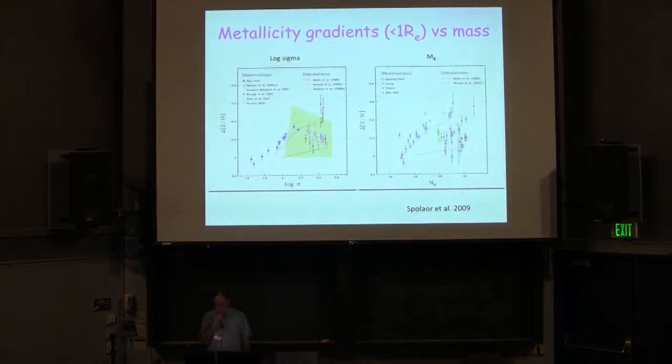Now if you look at metallicity gradients within one effective radius as a function of galaxy host mass, there's a couple of plots here from Spiller's work. One against velocity dispersion on your left and one against absolute magnitude on the right. It's essentially the same galaxy samples but with some different codings. And the lines represent some different models: a merger model from Bekki, Kawata, and Phil Hopkins' yellow region occupied here.